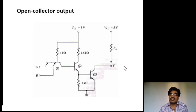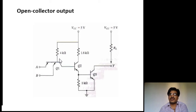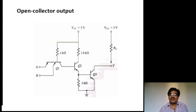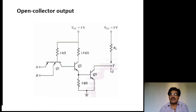Suppose both A and B are logic high — applying 5 V. Both emitter junctions of transistor Q1 are in reverse biasing, so at the base of Q1 we get around 5 V. Since 5 V is greater than the required 1.8 V, it is enough to switch on Q2 and Q3. Therefore Q3 is now ON, and the output voltage is nearly short-circuited — approximately 0 V — which is treated as logic 0.